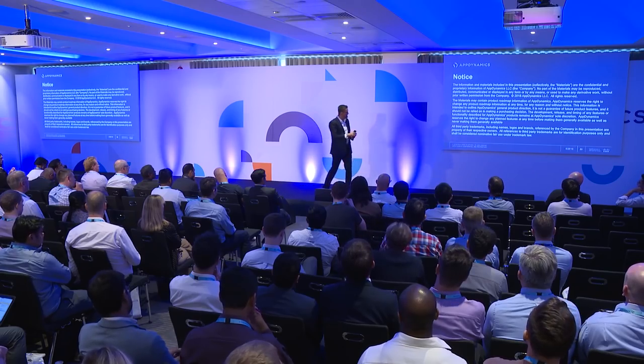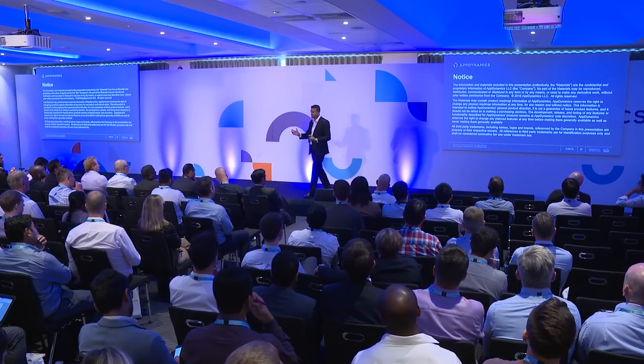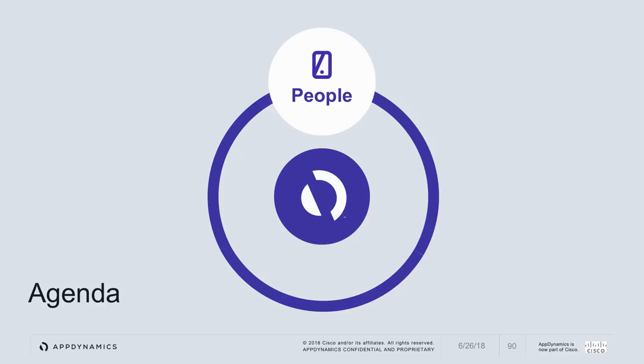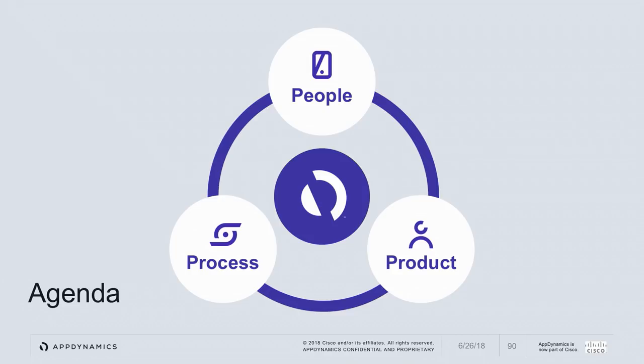This talk is all about that. We're going to structure it into three tracks: the first is about people, the second is about the product and what it's capable of, and the third is about the processes around your APM strategy.